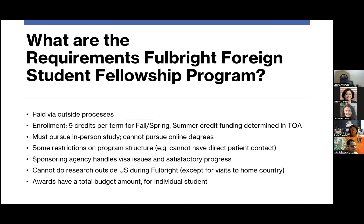Requirements for the Fulbright foreign student fellowship: the Fulbright agency and home country pay on behalf of the student. Even though they are fellows, students must register for nine credits in fall and spring, and six in summer if required. They must pursue education in person — it cannot be an online degree. There are restrictions such as no direct patient contact. The sponsoring agency handles visa issues and satisfactory progress, and students cannot do research outside the US during Fulbright except for home country visits.